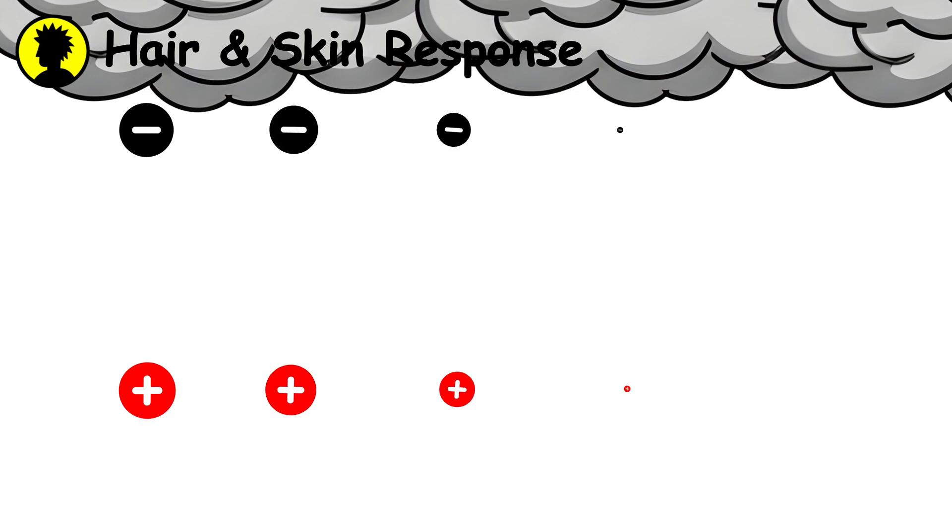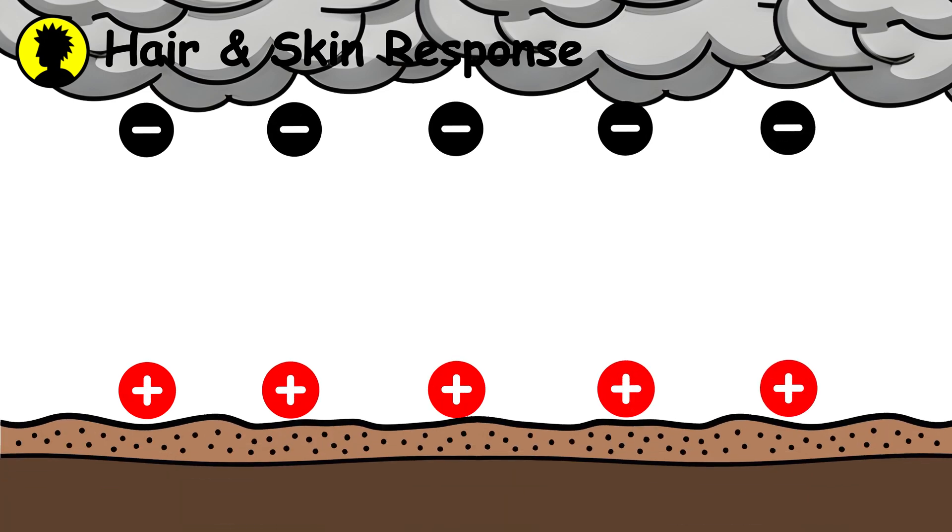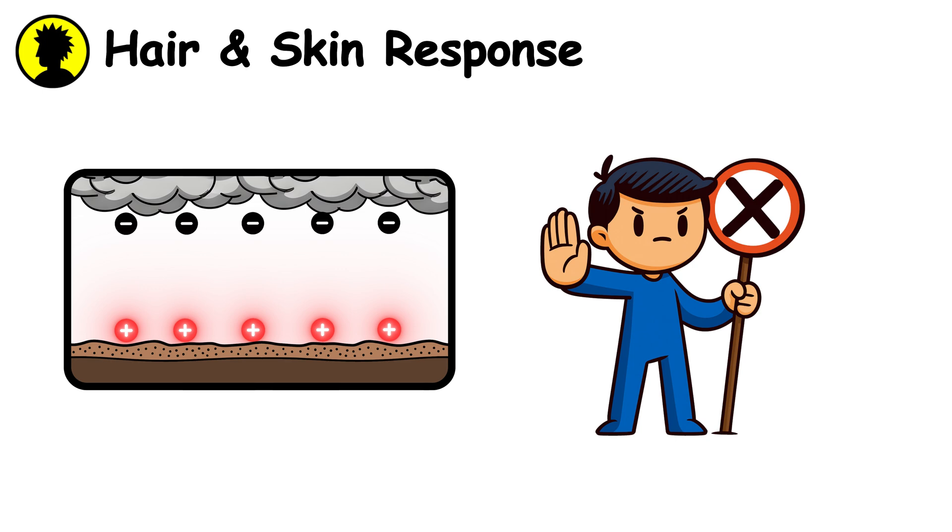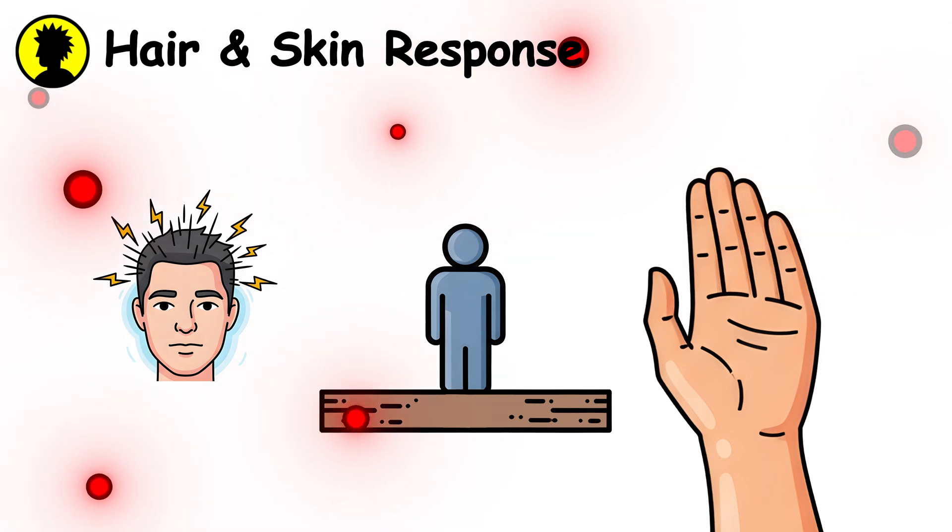This happens because the electric field between the ground and the storm cloud has become very strong. It's important to understand this is not a coincidence or something to laugh about. If you experience this, you are in immediate danger. The lightning channel may be forming directly above or even through you.